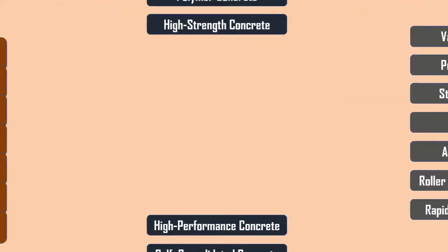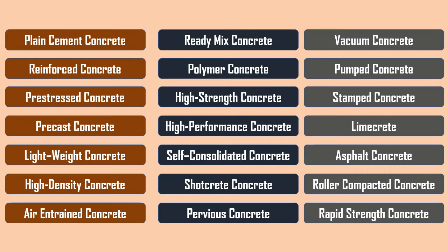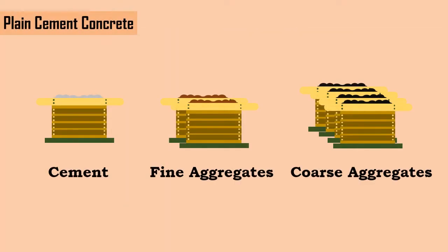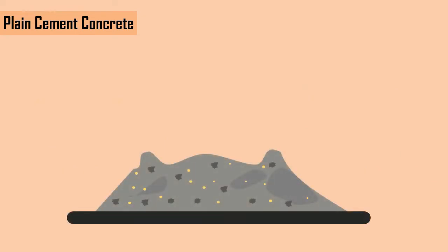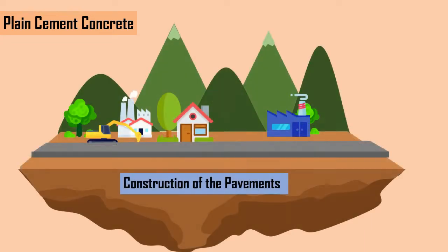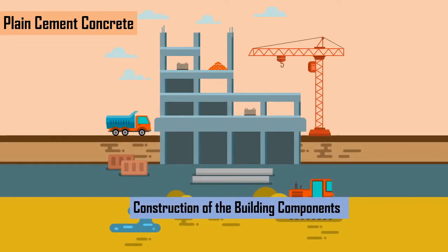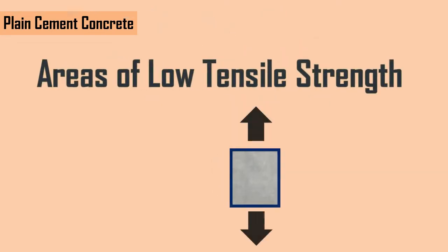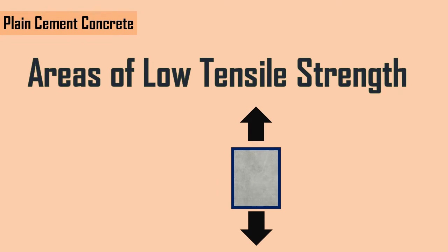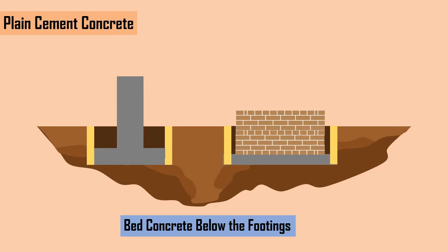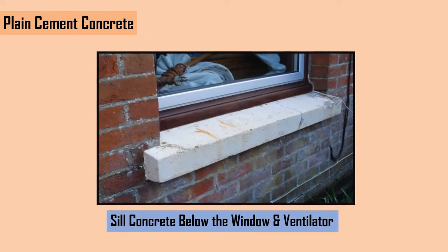There are many types of concrete available, which we will cover in upcoming videos. First, let's start with plain cement concrete. This is the simplest form of concrete, made only by mixing basic ingredients. These types of concrete are mainly used in the construction of pavements and buildings, especially in areas where there is a requirement for low tensile strength. It is also used as bed concrete below footings and walls, and sill concrete below windows and ventilators.